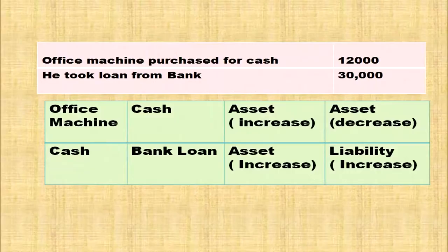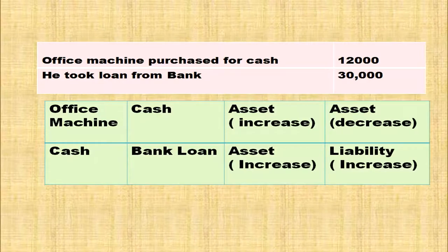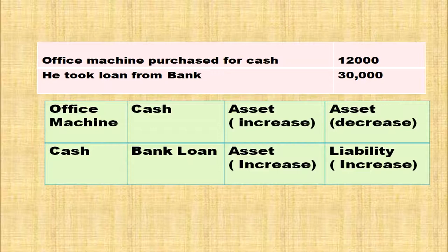Another transaction: Office machine purchased for cash. Office machine being an asset is one aspect; cash is the other aspect. Office machine is an asset — when asset is increased, it is debited. So, office machine is debited. Cash is going from the business — asset is decreasing, so cash account is credited. Office machine account debited; cash account credited.